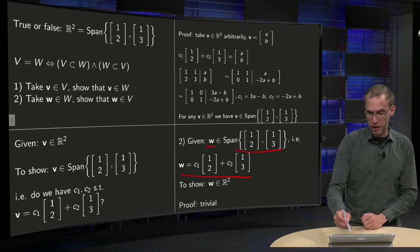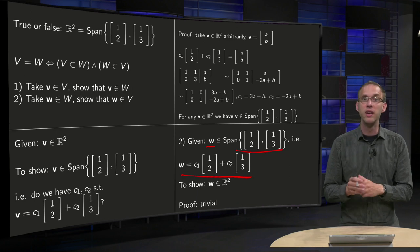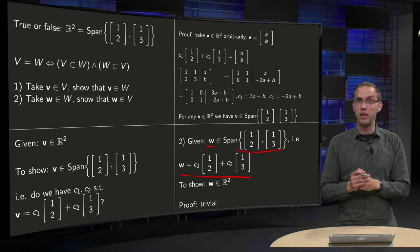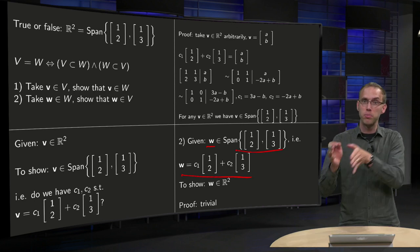Now any w in the span can be written as constant times [1,2] plus constant times [1,3]. And obviously this vector is also in R², so the span is also a subset of R².